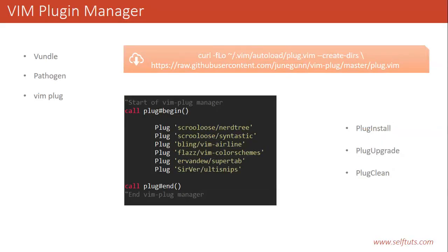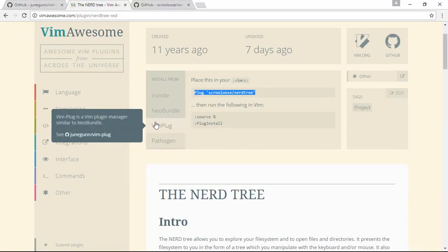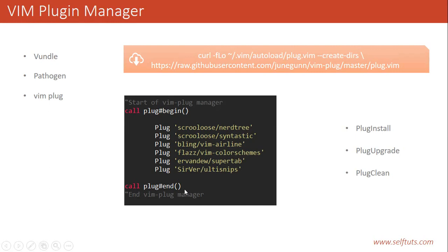This is how we can easily manage our plugins. We can use multiple plugins — for example, scrooloose/nerdtree, vim-airline, a color scheme plugin, and supertab. We write the plugin names which we can find from vimawesome based on different categories, and after opening Vim we use PlugInstall to have vim-plug automatically download all the plugins. This is how we use Vim Plugin Manager to maintain our plugins inside Vim.